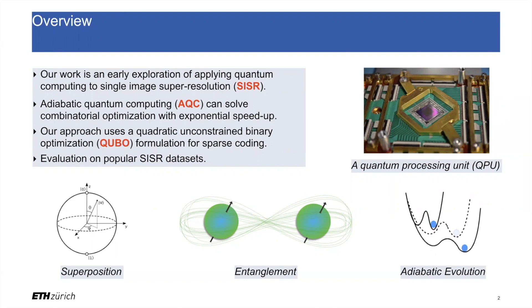In our approach, we cast the super-resolution problem into one of combinatorial optimization, and in particular, we used a quadratic unconstrained binary optimization formulation for sparse coding. Having developed our approach, we evaluated it on popular super-resolution datasets.